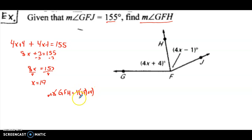4 times 19 is 76, plus 4. Angle GFH is 80 degrees. That's how we do that one.